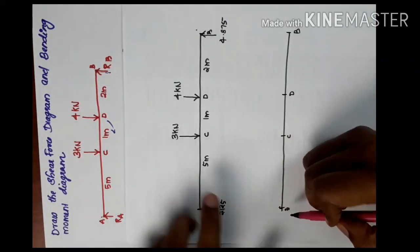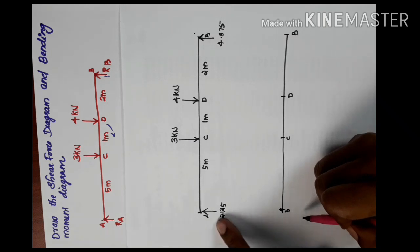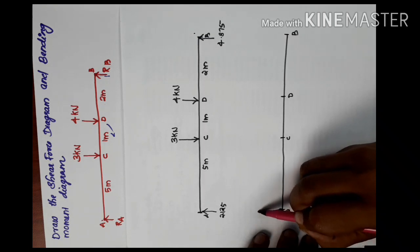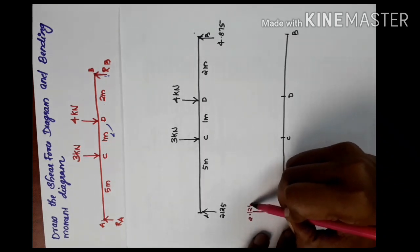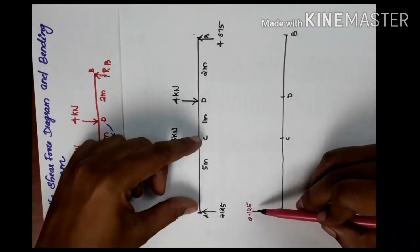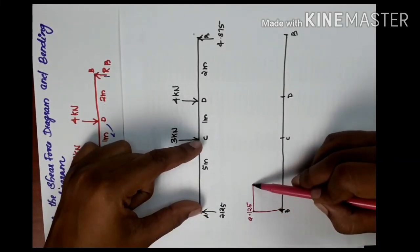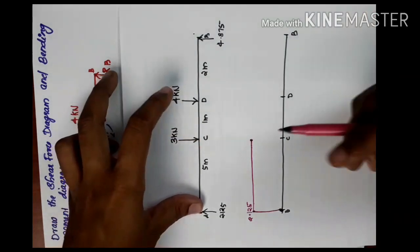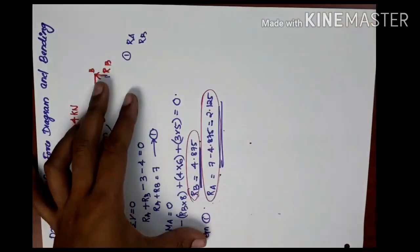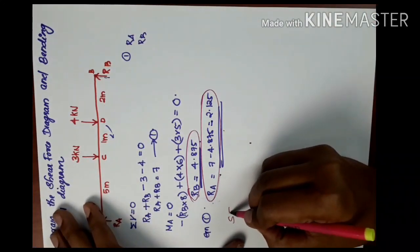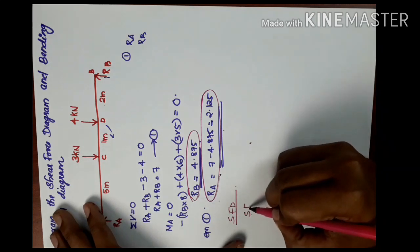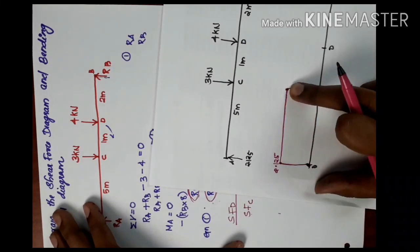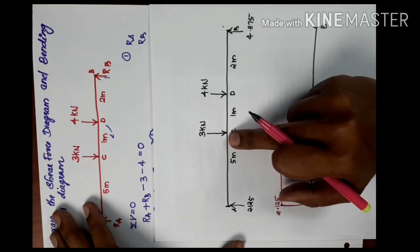Now we will draw the shear force diagram. At A, in the upward direction, the value is 2.125. I am marking point A in the upward direction as 2.125. From A to C there is no distributed load, so the shear force stays at 2.125. At C, there is a point load of 3 downward, so we drop by 3. The shear force at C becomes 2.125 minus 3 equals minus 0.875.